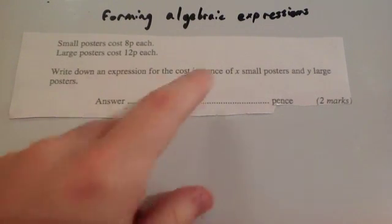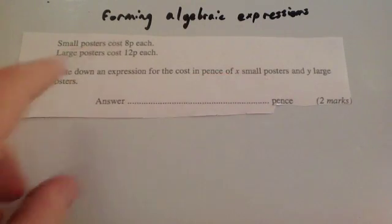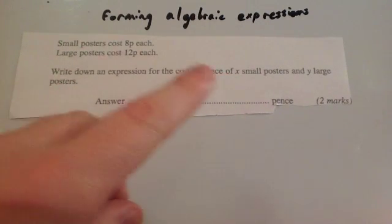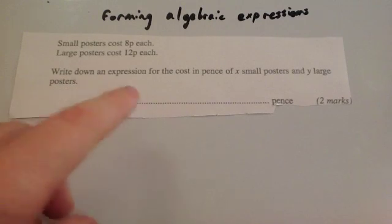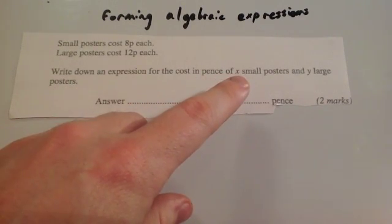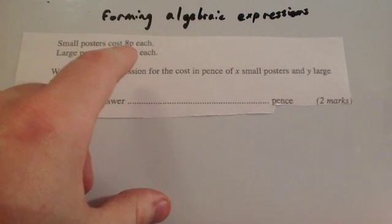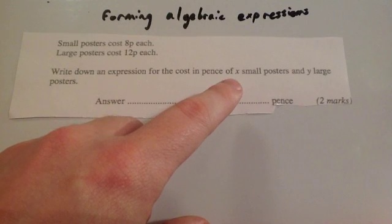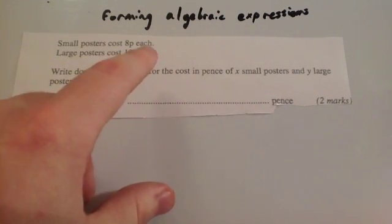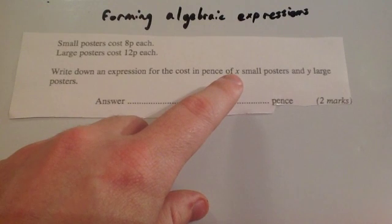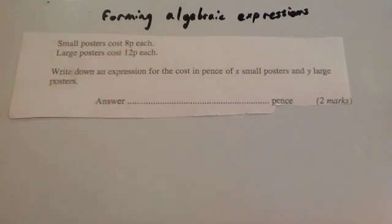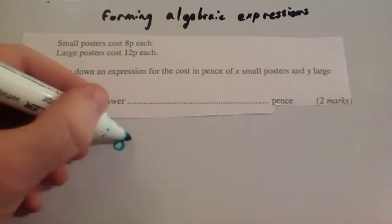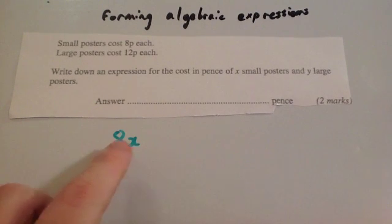So x is the number of small posters you're getting and y is the number of large posters. If you were to buy 2 small posters, you would do 2 times 8 to find the cost, so that would be 16p. If you were to buy 3 small posters, you would do 3 times 8, which would be 24p. If you buy x posters, to find the cost you would do x times 8. But in algebra you have to put the number first, so that would be 8x — the cost of the small posters.